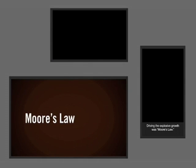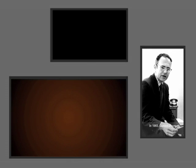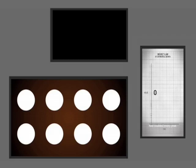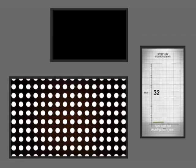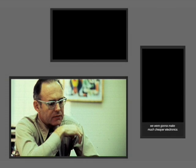Driving the explosive growth was Moore's law. In 1965, Gordon Moore observed that the number of transistors on an integrated circuit had doubled every year. He took that doubling every year and extrapolated from 60 to 60,000 components for the next 10 years. By putting a lot more stuff in a chip, we were going to make much cheaper electronics.